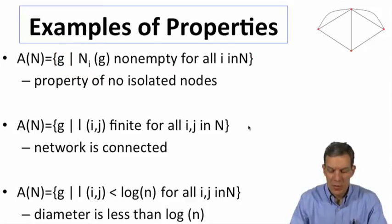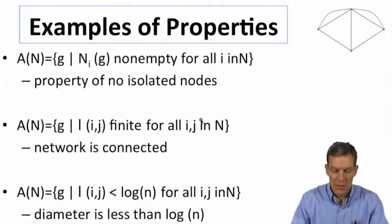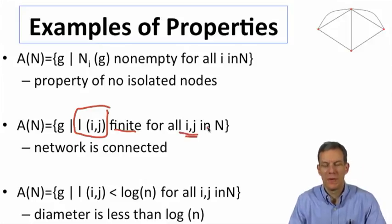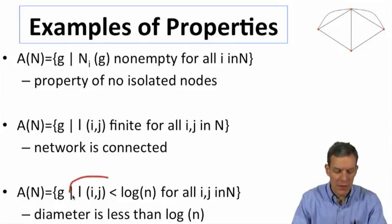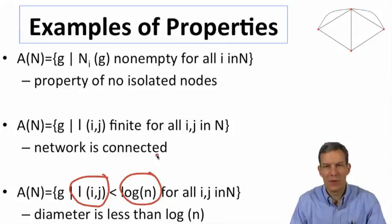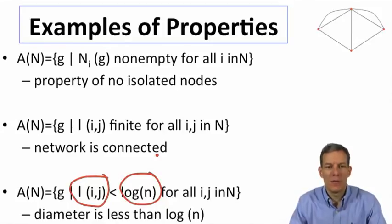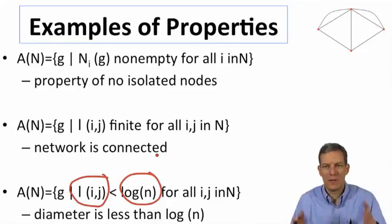Another property would be that the network is connected. So for instance, that the path length between i and j is finite for all pairs of nodes. We could also have a property that the average path length is less than log N. The diameter is less than log N. So that would be another property. So each one of these is just specified in terms of here are the networks that have this, here are the networks that don't. That's a mathematical way of representing a property of a network.